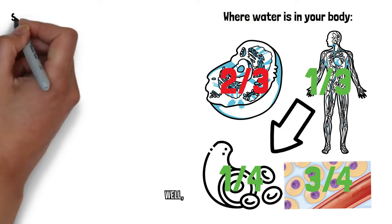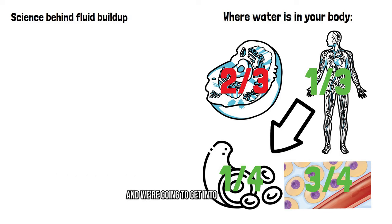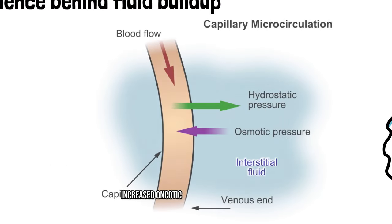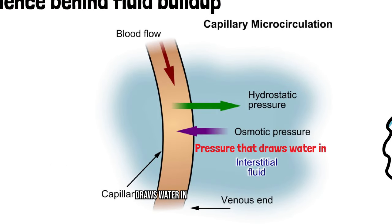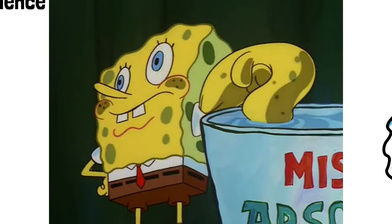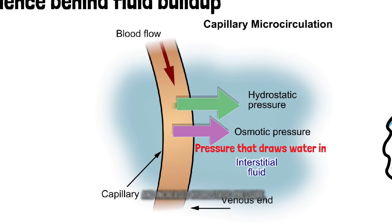So why does fluid end up there? Several reasons, and we're going to get into some science here. Increased oncotic pressure, or the pressure that draws water in the interstitial space. And increased hydrostatic pressure, which is the pressure that pushes water out in the blood vessels.